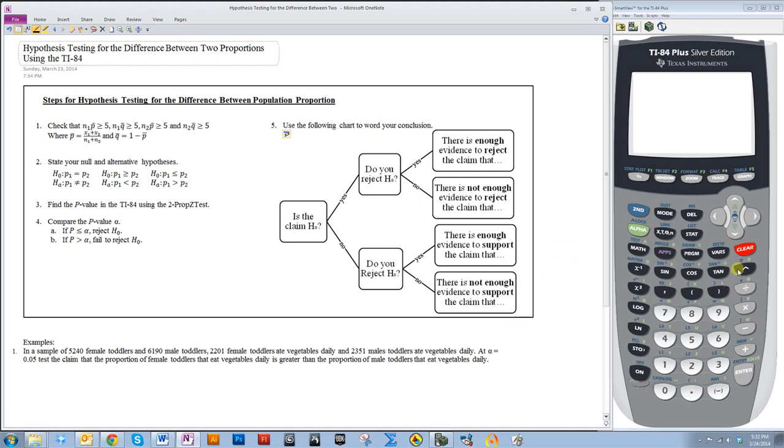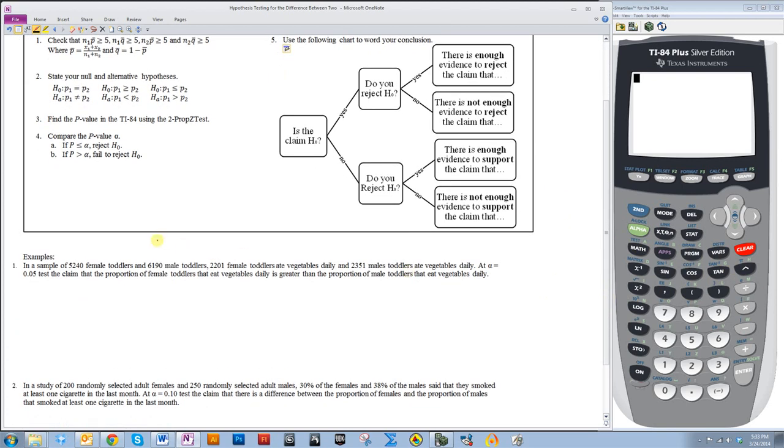Let's look at this first example. In a sample of 5,240 female toddlers and 6,190 male toddlers, 2,201 female toddlers ate vegetables daily and 2,351 male toddlers ate vegetables daily. At a 5% level of significance, test the claim that the proportion of female toddlers that eat vegetables daily is greater than the proportion of male toddlers that eat vegetables daily. So we'll let set 1 be females and set 2 be males. So we want to test the claim that p1 is greater than p2.